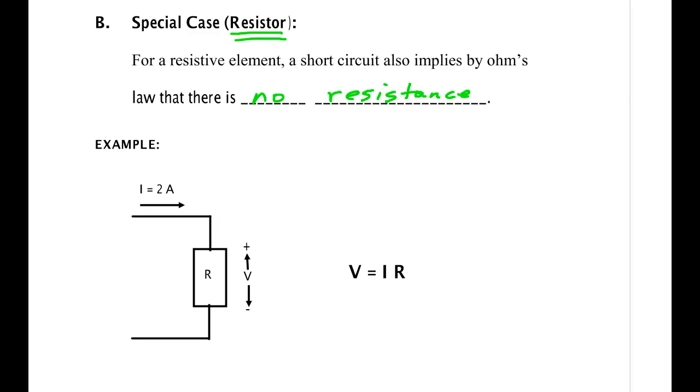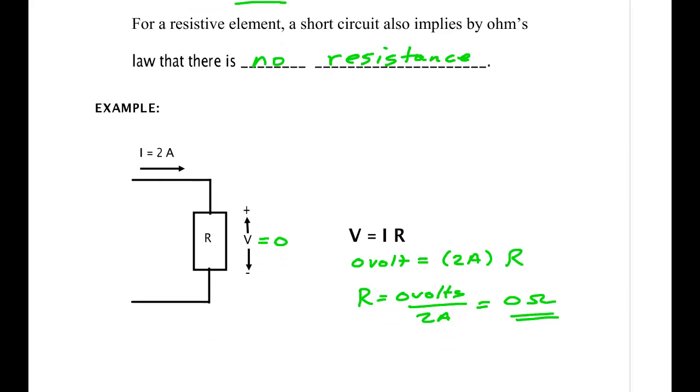So for instance, if you happen to measure that this voltage is zero even though you're sending 2 amps to it, then 0 volts has to equal 2 amps times R. So R is 0 volts over 2 amps, which is 0 ohms. And that shows you that that's the case. A short circuit for a resistor is a circuit that has no resistance.